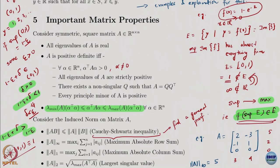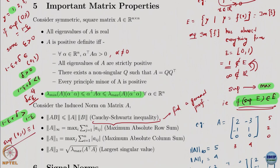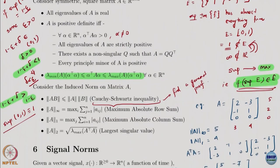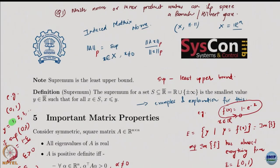We never talk about definiteness of non-symmetric matrices — the eigenvalues of non-symmetric matrices are possibly complex, which does not give nice results. Whenever we say positive definite matrices, we are invariably talking about symmetric matrices. For symmetric matrices, there is an important inequality: the quadratic form alpha-transpose A alpha is lower bounded by lambda-min times alpha-transpose alpha and upper bounded by lambda-max times alpha-transpose alpha.